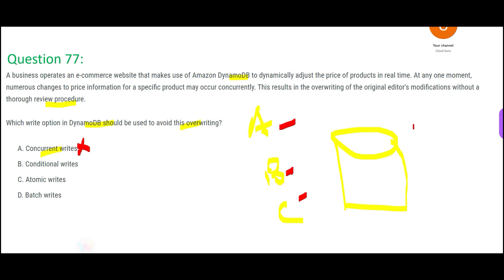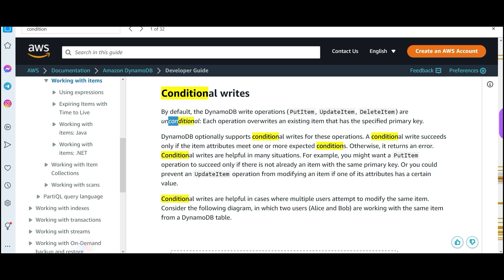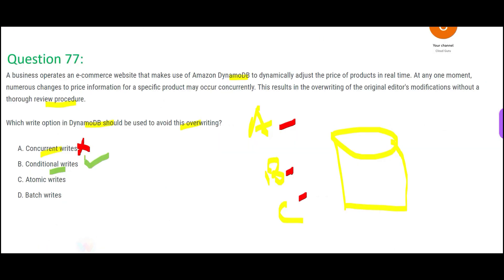Conditional writes is the correct answer. By default, writes are unconditional — they simply overwrite whatever is there. With conditional writes, an update will succeed only if one or more expected conditions are met. This helps you create a review procedure so that overwriting is avoided.